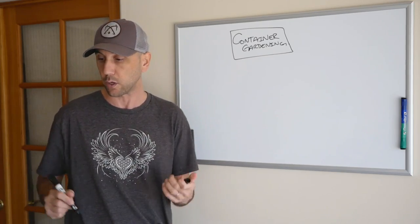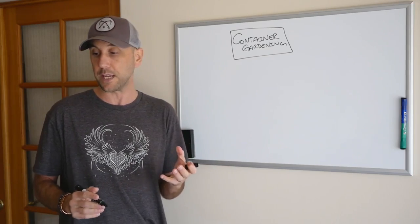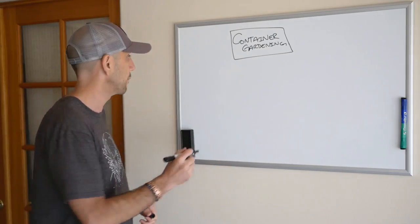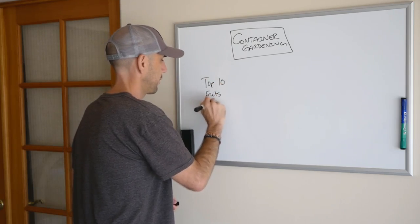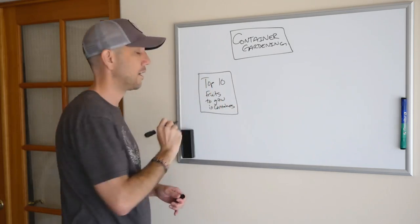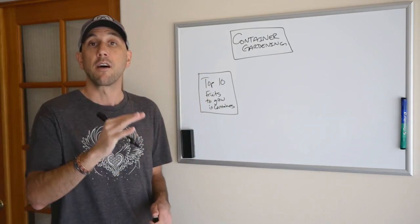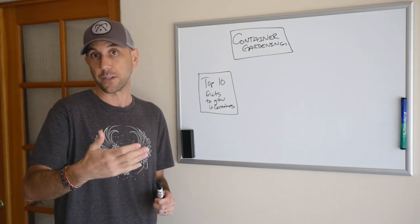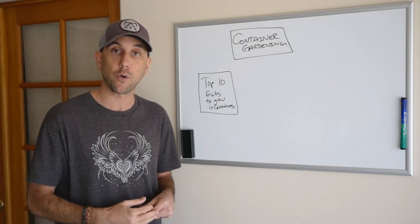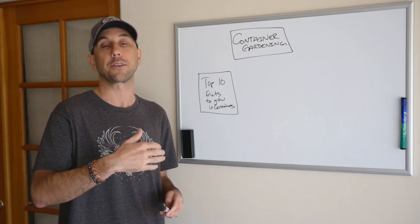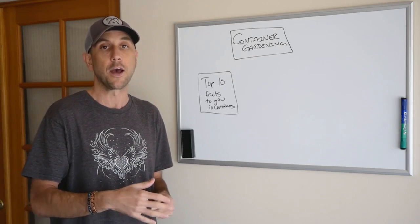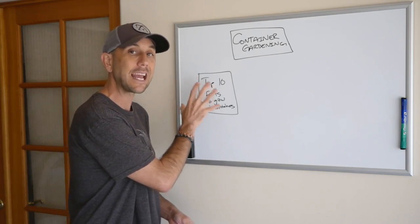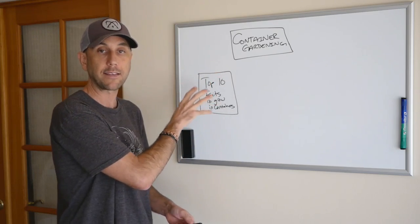So the first idea would be the top 10 blank to grow in containers. Now I wrote the top 10 fruits to grow in containers, but you could obviously do the top 10 herbs to grow in containers. Then you could do a post about the top 10 vegetables. You could possibly do the top 10 root vegetables. So there's a lot of variation off of this little basic idea.